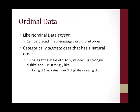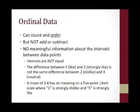Ordinal data is like nominal data, except that it can be placed in a meaningful or natural order. Categorically discrete data that has a natural order is what we consider to be ordinal data. For example, using a rating scale of 1 to 5, where 1 is strongly dislike and 5 is strongly like, would be considered an ordinal scale. A rating of 5 indicates more liking than a rating of 4, so there's a natural order there. But we're still talking about discrete categories. So with ordinal data, you can count it and you can order it, but just like with nominal data, you cannot add it or subtract it in any meaningful way.